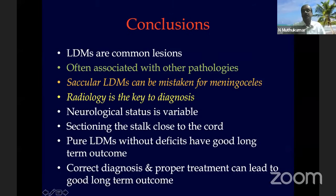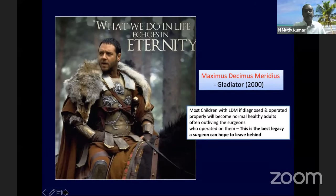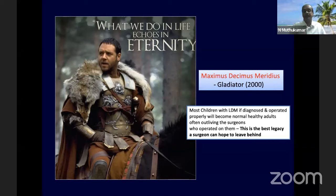In conclusion, LDMs are common lesions and the majority of children fortunately have no neurological deficits. If treated appropriately, a normal child is the outcome. As the Gladiator quote goes — 'What we do in life echoes in eternity' — most children with LDM, if diagnosed and operated properly, will become normal, healthy adults, often outliving the surgeons who operated on them. That is perhaps the best legacy a surgeon can leave behind.